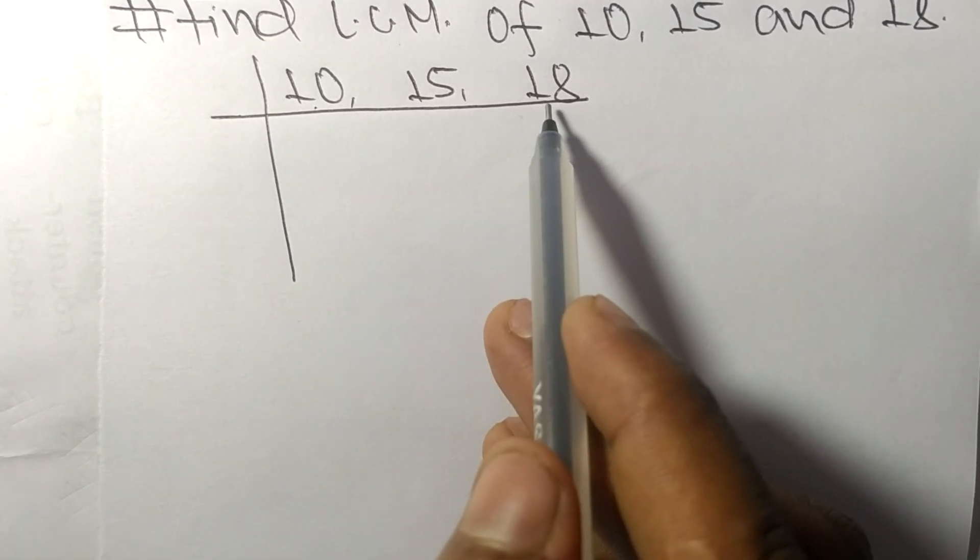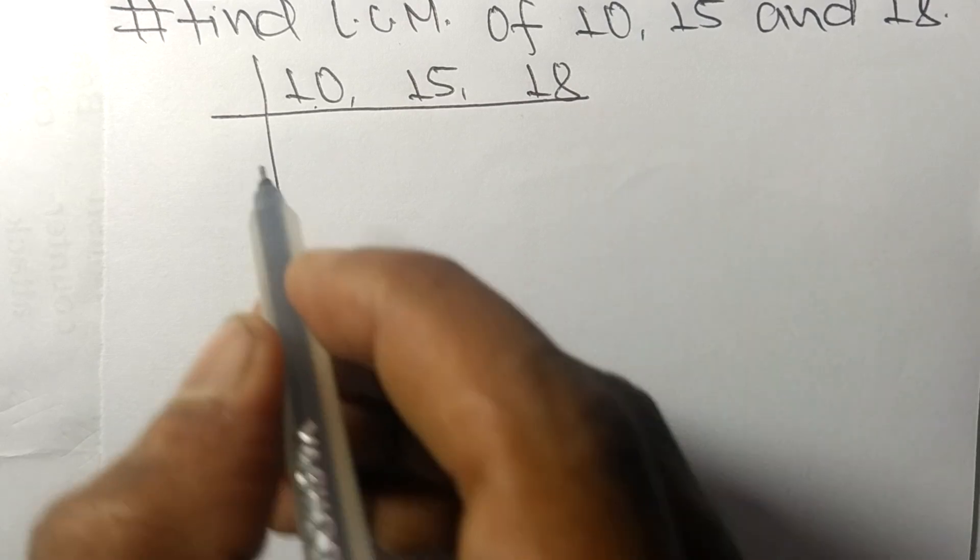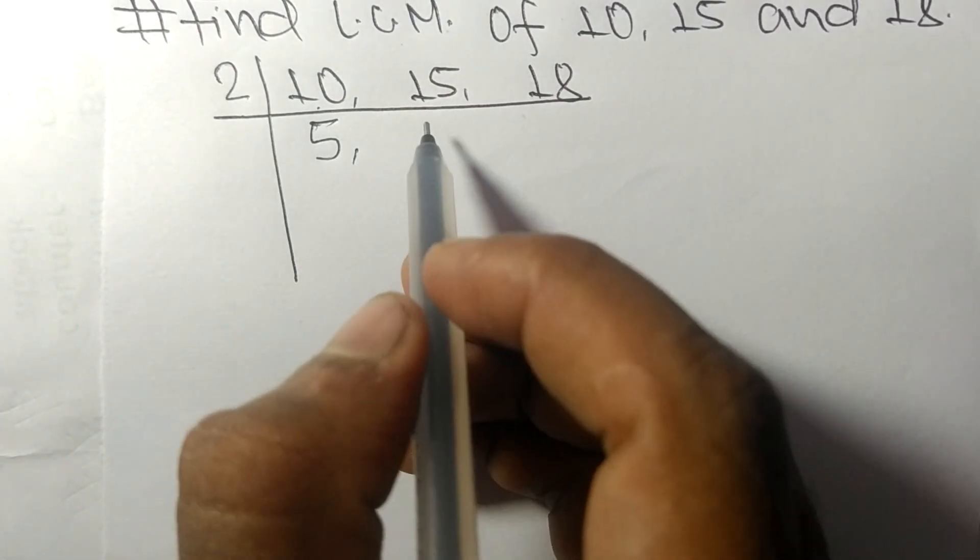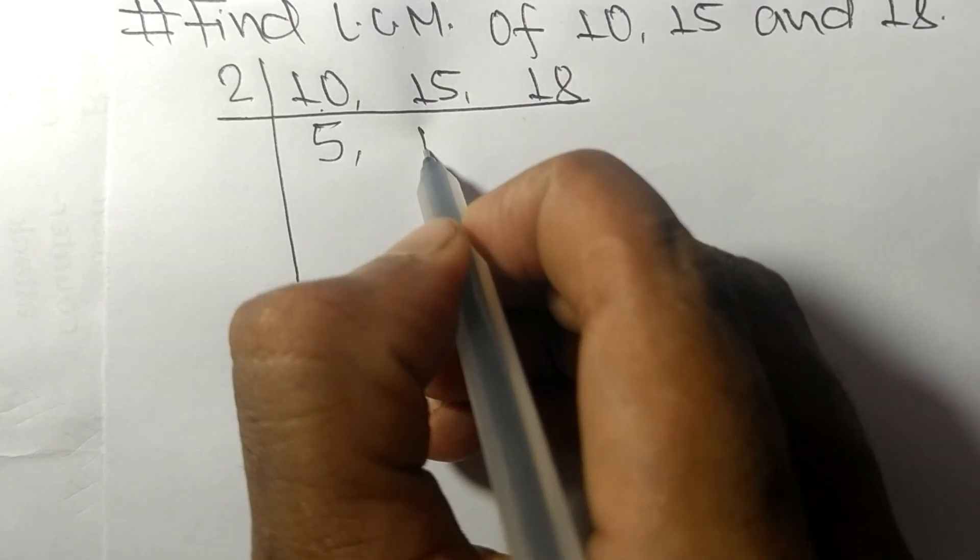10 and 18 are exactly divisible by 2. 2 times 5 means 10, 15 not divisible so it is same, 2 times 9 means 18.